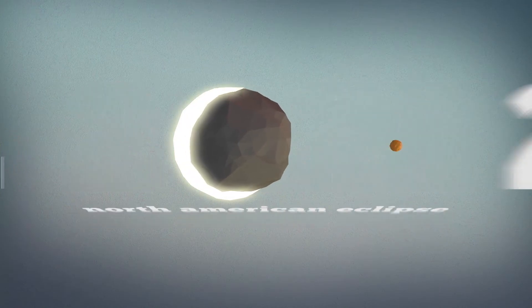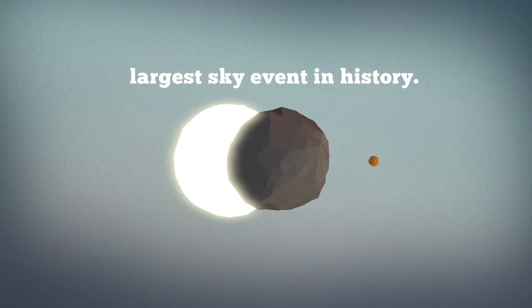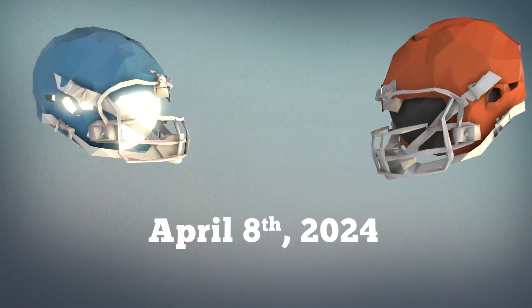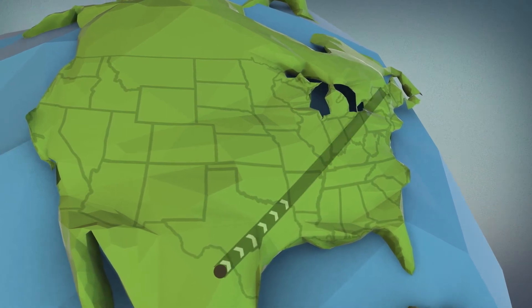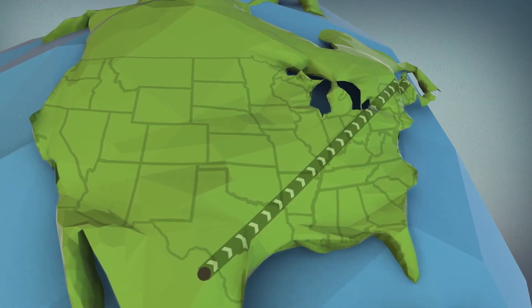Astronomers are already claiming this will be the largest sky event in history, or as we like to call it, the Super Bowl of the Sky. The path of this total eclipse will begin in Mexico, pass through 15 states in the U.S., and end in Canada.